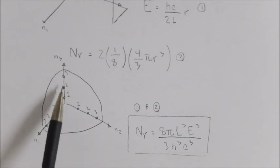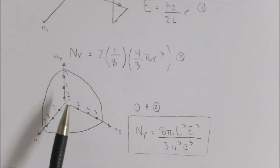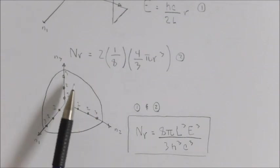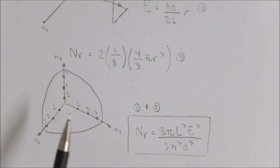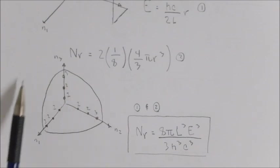We're considering the number of allowed energy states within this volume that is shown right here. The 1/8th term is to get this 1/8th portion of the full 3D sphere so that we will only be talking about positive quantum numbers for this eighth component instead of the full 3D sphere where we might get other values.